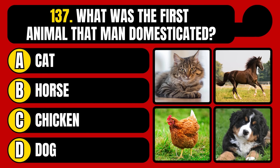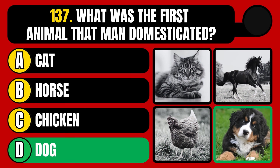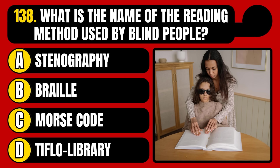What was the first animal that man domesticated? Cat, horse, chicken, or dog? The correct answer is option D, dog.